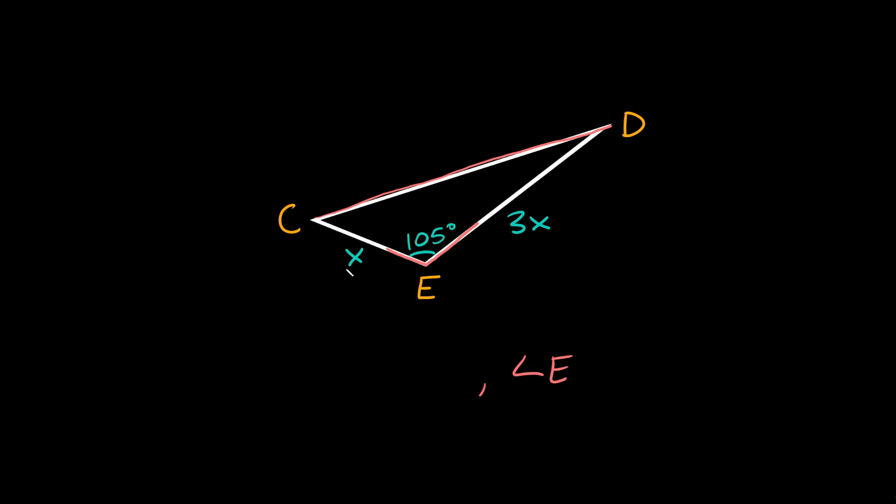Well like I said this side is labeled as X and this side is labeled as 3X, so we know that this side is 3 times as long as the short side, so that means angle C is longer than this short side. So we know angle C goes here in the middle and then the shortest side over here is angle D. So then we'll put angle D as the shortest side.